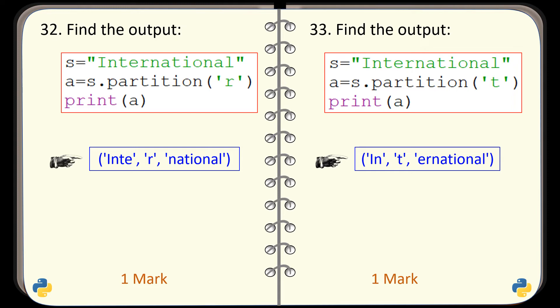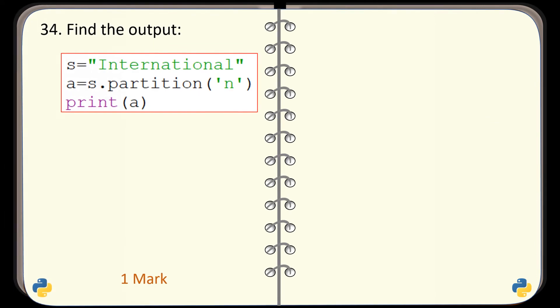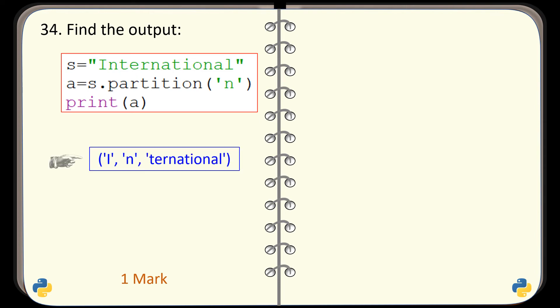Actually, the method partition always generates a tuple of three elements — always. Question number 34. Find the output generated by this code. Again, the method partition is used, so the output will be a tuple of three elements. And the answer is this one.